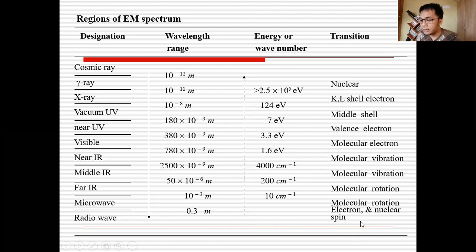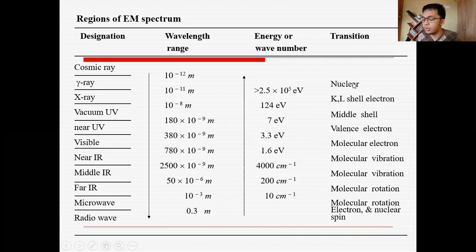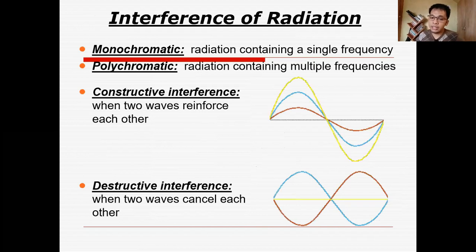When radio waves hit atoms or molecules, the response is molecular rotation, electron spin, and molecular spin. For far infrared, the response is usually vibration. For visible light, we get molecular electronic absorption spectra and valence electron transitions. For X-rays, the interaction is at the nucleus level. So in the visible region, interaction is only with the electrons of molecules.